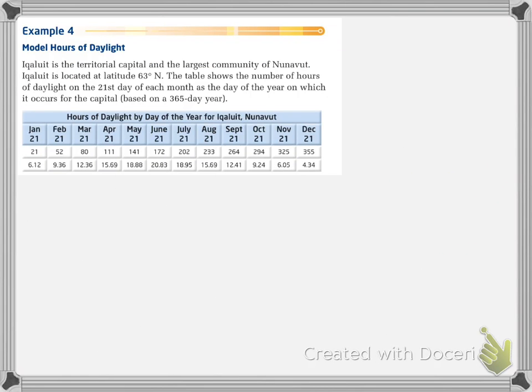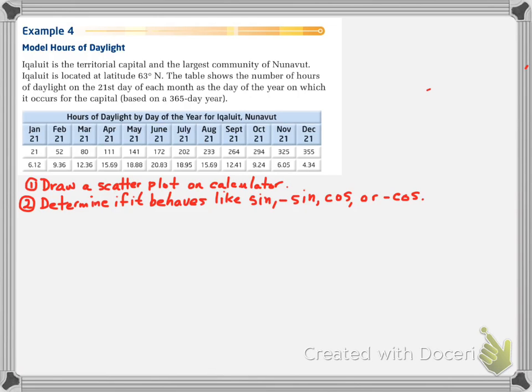In our last example, we have to figure out a sine graph from this data. Draw a scatter plot using your calculator. Put in the values into L1 and L2. Drawing your scatter plot. Then we're going to determine, from the graph, whether it behaves like sine, negative sine, cos, or negative cos. And for our purposes, and dealing with graphs like this, we're going to say it looks like a negative cos graph.